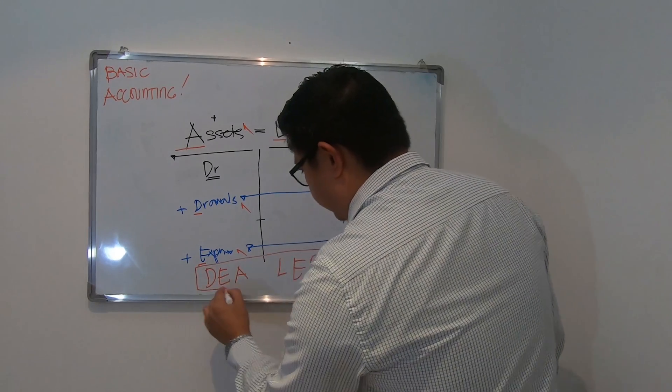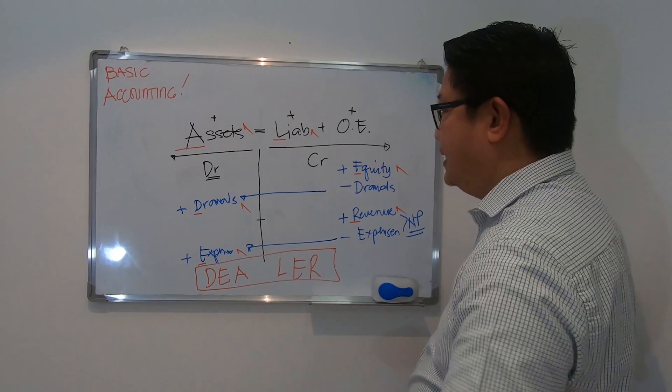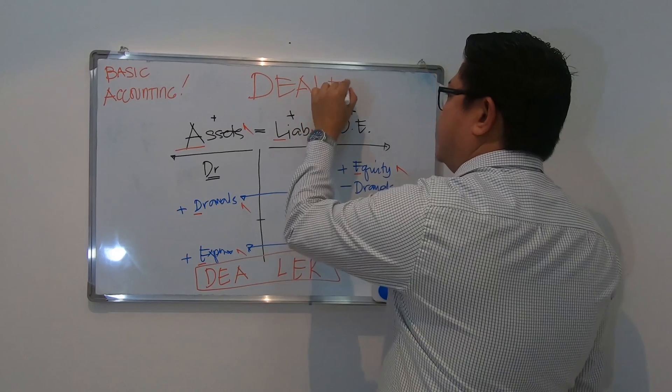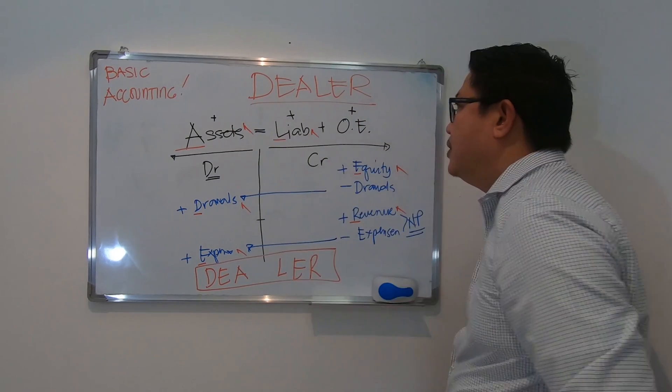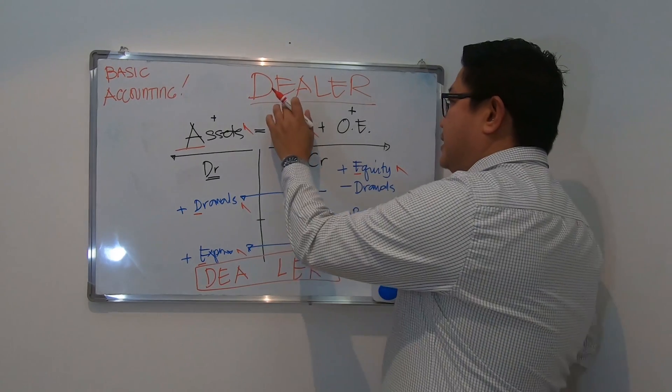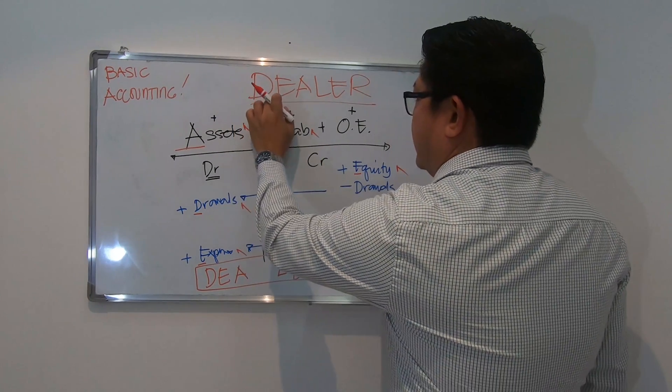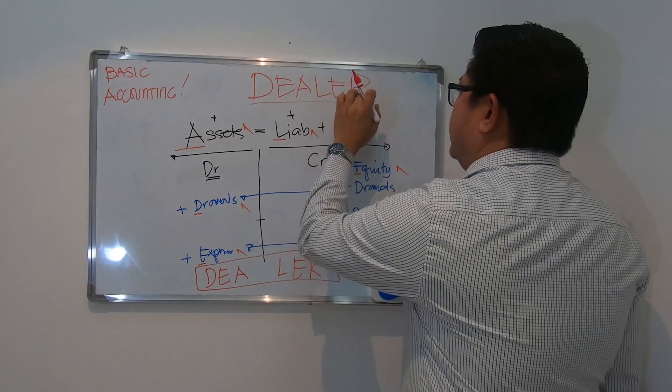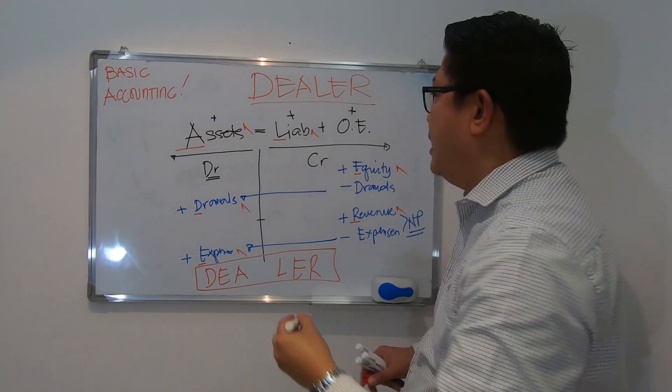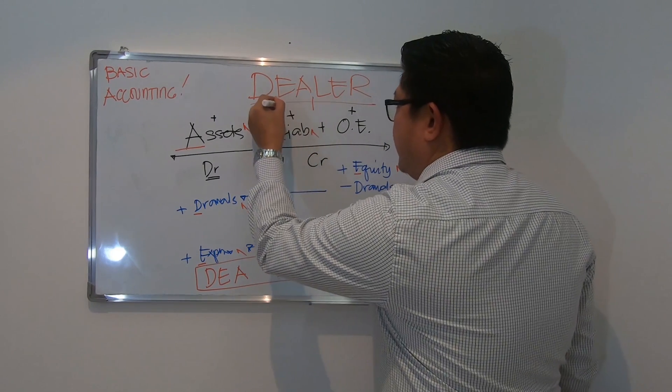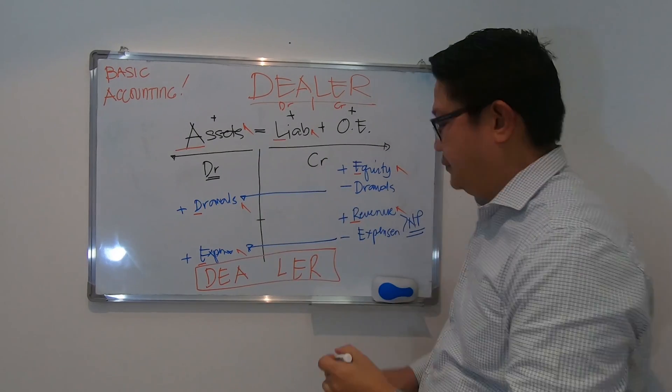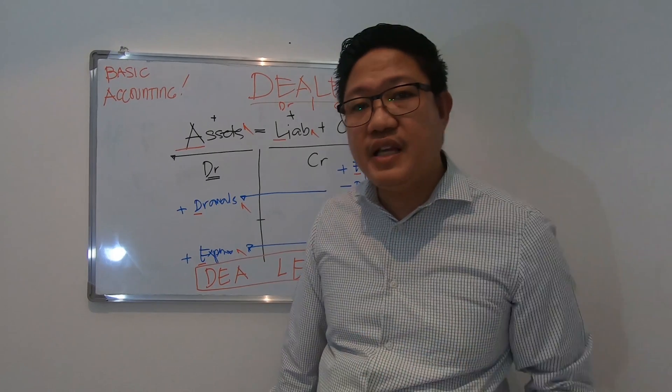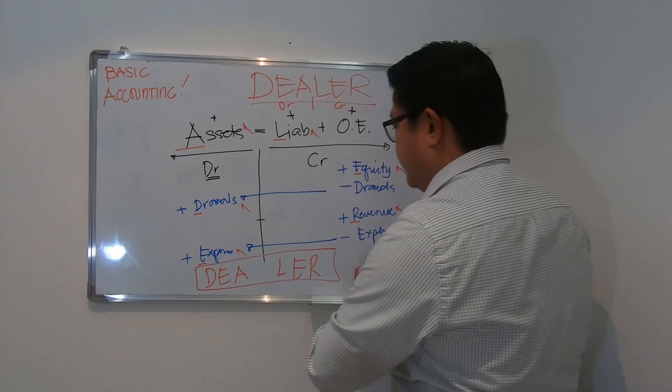Always remember this word. This is DEALER. Debit side: drawals, expenses, assets. And the credit side, we have liability, equity, and revenue. So these are the normal balances all the time. Remember this. From basic accounting to advanced accounting, you will use this. I'm sure.